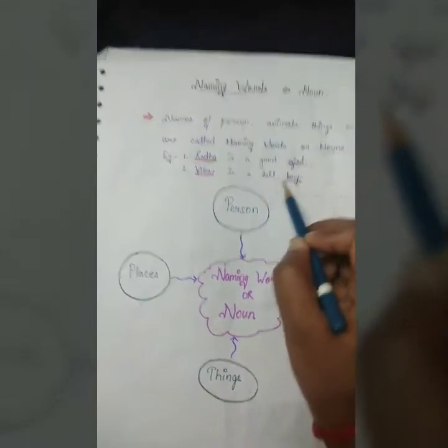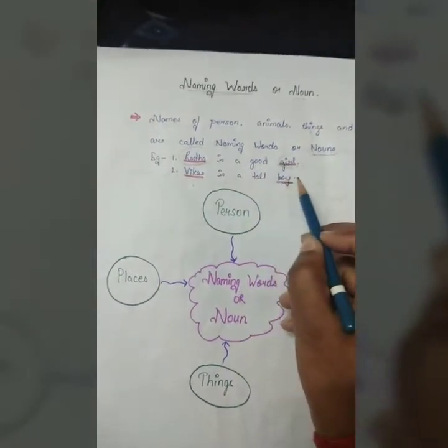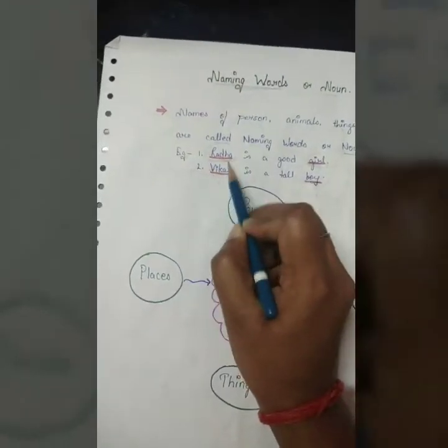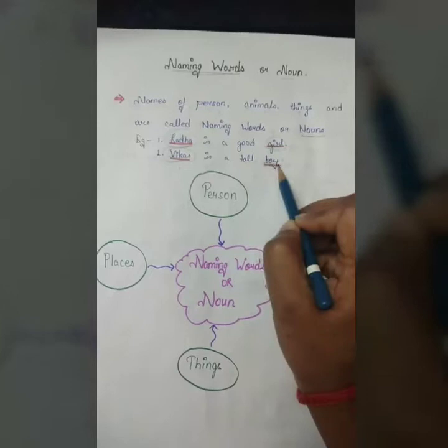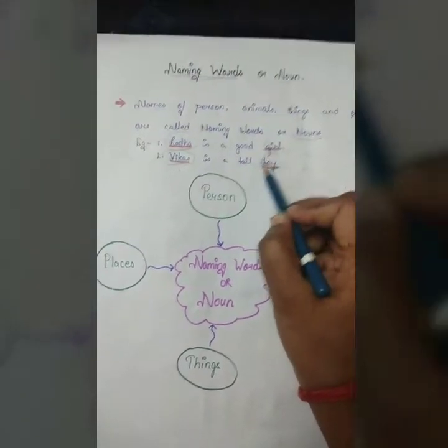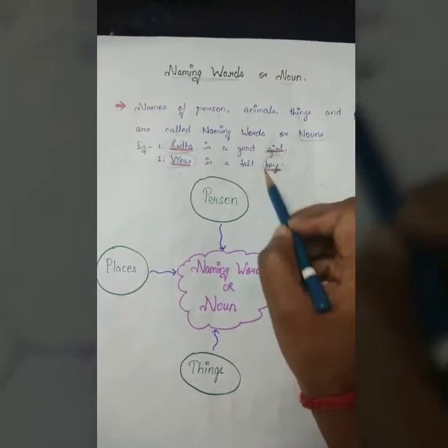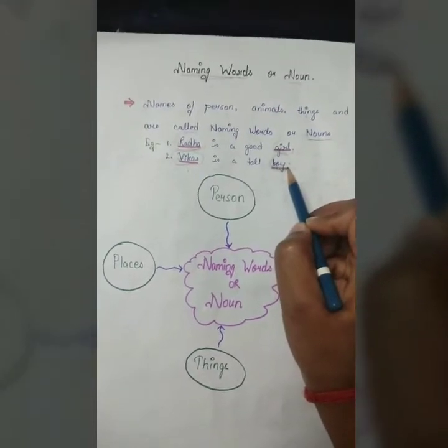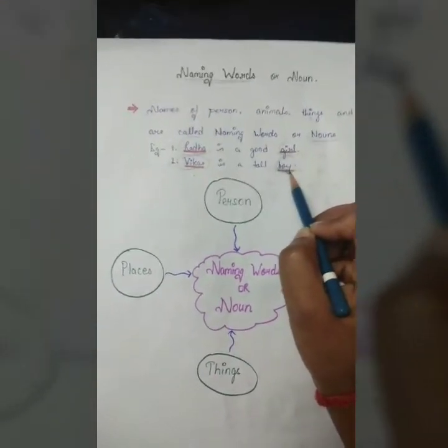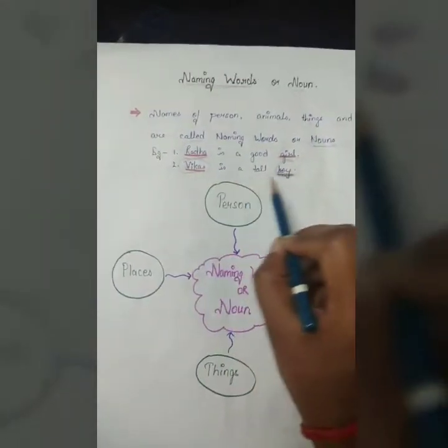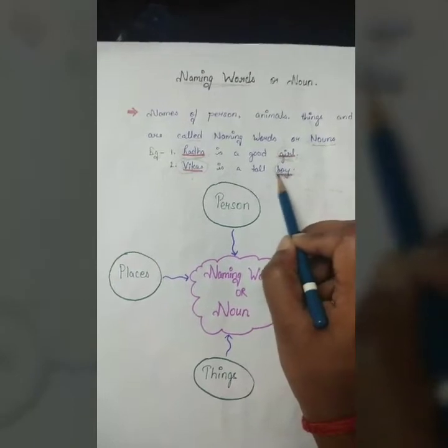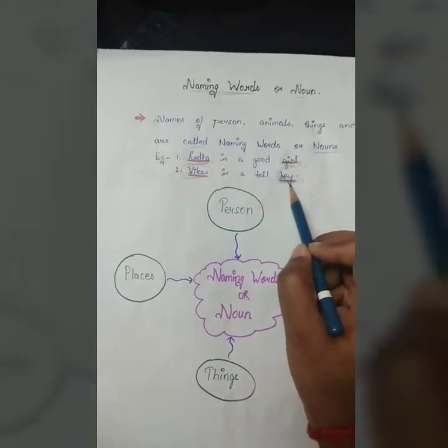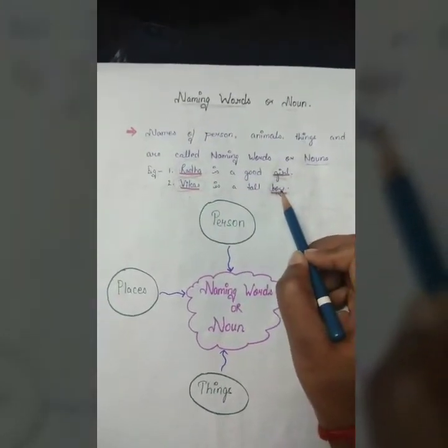In the same way, our next example, Vikas is a tall boy. So now here, Vikas, Vikas is the name, you all know. And boy, boy is also the name for the male community. If we talk about any girl, what do we say? Randomly, boy. If we don't know her name, what do we say? Boy. So, Vikas is a tall boy. So here, Vikas is a boy. So here, what is the noun? Vikas and boy.